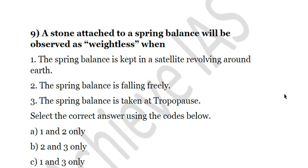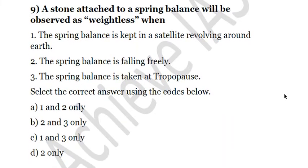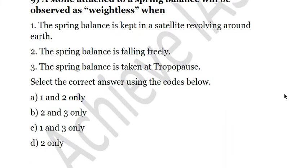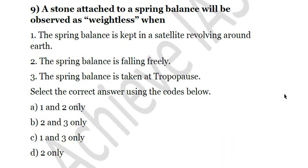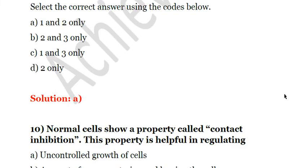Next question: a stone attached to a spring balance will be observed as weightless when — first, the spring balance is kept in a satellite revolving around Earth; second, the spring balance is falling freely; third, the spring balance is taken to the tropopause. Only the first two statements are correct. There is no relation between the third statement and weightlessness — it is an absurd statement. The answer is 1 and 2 only. A is the answer.